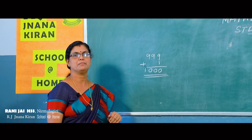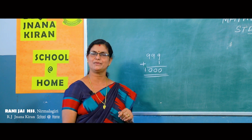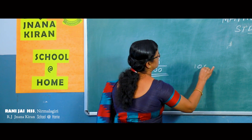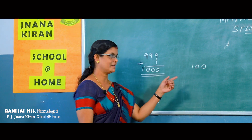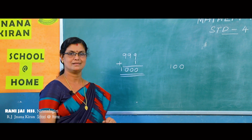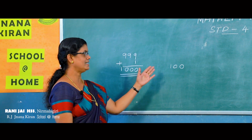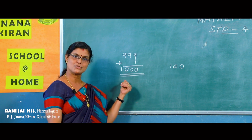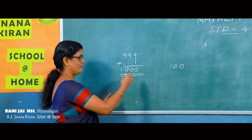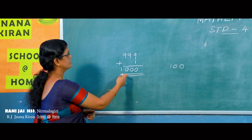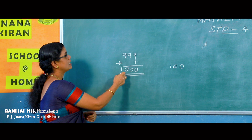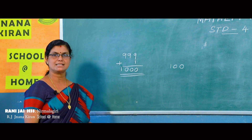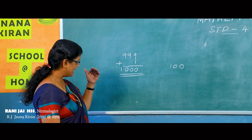Can you read this four-digit number? Anybody, try to read. Now look at this number — can you read this one? Yes, one hundred. Similarly there is a name for this number also. Here we have ones, tens, hundreds, and this is in the thousands place.